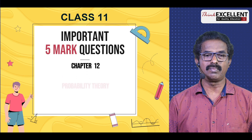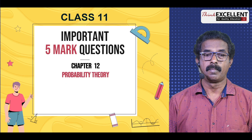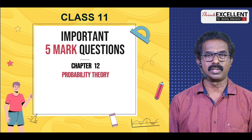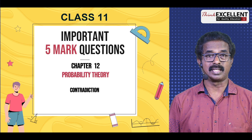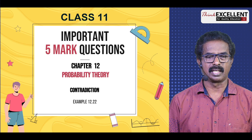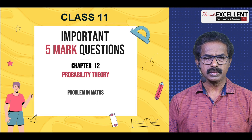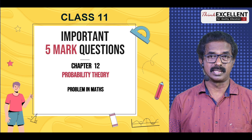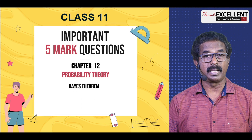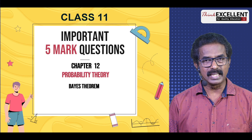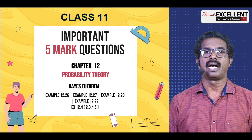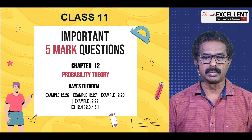Chapter 12: Probability Theory — a very simple topic. For five-mark questions, learn the theory and the Bayes' theorem. Before Bayes' theorem, study some important questions on contradiction — where A and B are stating the same fact but contradicting each other, and the probability questions. Example 12.22, and the problem where a mathematics problem is given to three students — Exercise 12.3, question number 6. For Bayes' theorem, don't leave any sum — you can expect a question. Example 26, 27, 28, 29, and Exercise 12.4, question numbers 2, 3, 4 and 5.